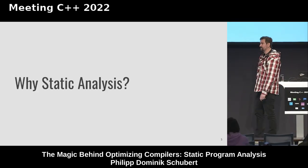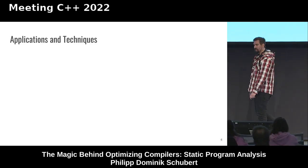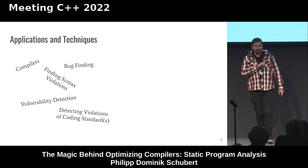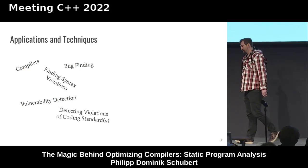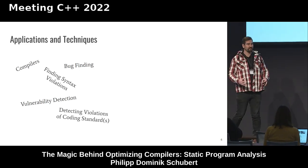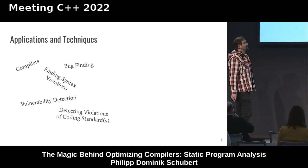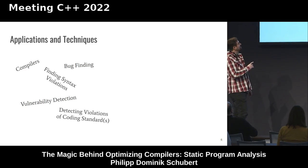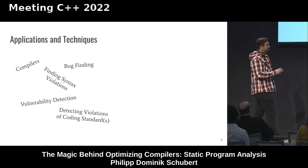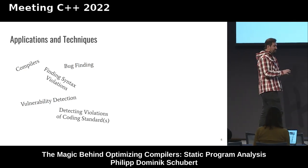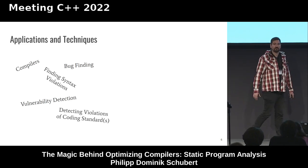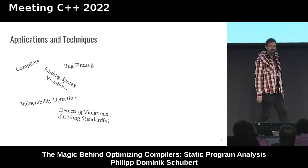If you read that book, you will notice that static data flow analysis is only a small part of one chapter. For compiler guys, data flow analysis is a thing — we need to use it in order to find some interesting program properties which we can then use to build cool optimizations. And here on the shoulder plate it even says "data flow analysis", so this will be a major topic of this talk.